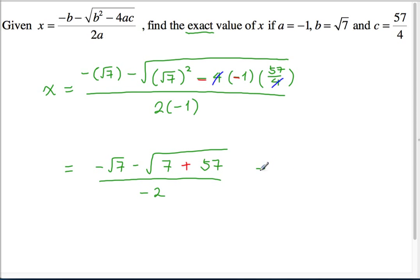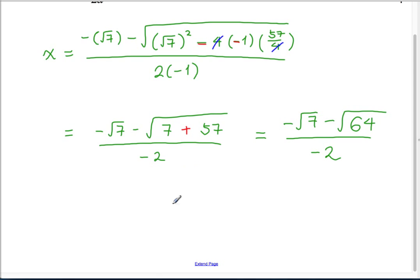Okay. I can go ahead and add 57 and 7, 64 all over negative 2. Good. Now 64 is one of our special perfect square numbers. What's that going to reduce to? 8, because 8 times 8 is 64. Excellent.